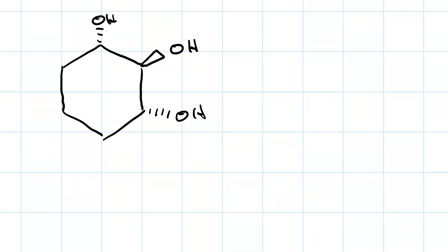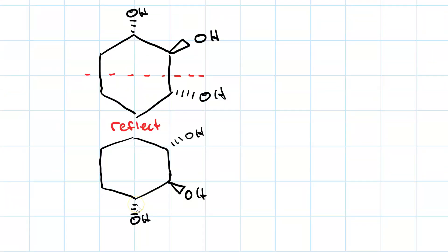What about this molecule? Does it have a mirror plane? Well, if we reflect it through this plane, we see something that looks pretty different. Now our topmost carbon doesn't have any substituents, and here where we should have a hydroxyl on a wedge, we've got one on a dash. Here, where our initial one has a hydroxyl on a dash, we have one on a wedge. And down here, we have a hydroxyl where there isn't one in the initial. But if we then take this and rotate it 60 degrees counterclockwise in the horizontal plane — like this — what do you think we'll see?